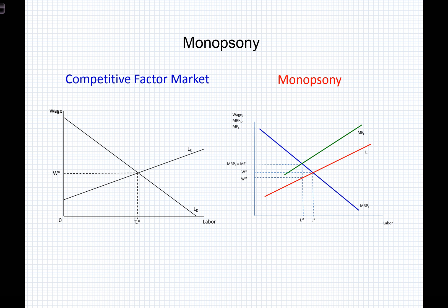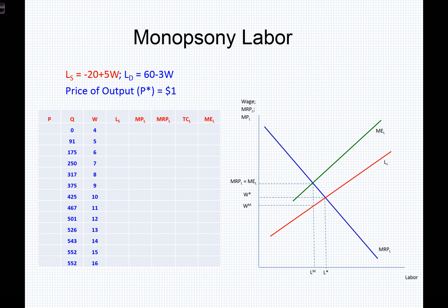Let's look at this further. We have our market model here. Let's think about how we form these values by looking at a labor supply relationship, a price of output, and a hypothetical labor demand — which may coincide with a marginal revenue product of labor relationship. Assume I've given you this entire table to fill out, with values for labor supply, labor demand, price of output, and quantities produced at certain wages. With that information, we can fill out the remainder of this grid.